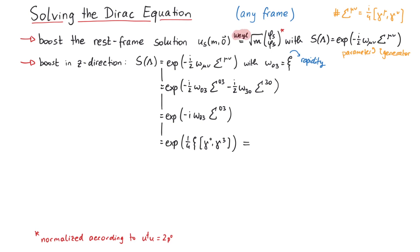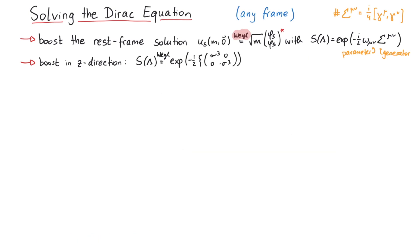Since we are using the chiral representation of the gamma matrices, this can be written in terms of Pauli matrices like this. Now, the bispinor U for a momentum in z-direction is given by S times the rest-frame spinor. In order to calculate this, we expand the exponential in a Taylor series.